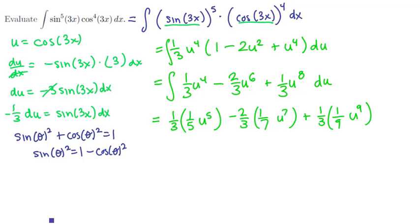At this point, we can clean up and back substitute. So we're going to get a grand total of 1 fifteenth u, which is cosine of 3x, quantity to the fifth, minus 2 over 21 times cosine of 3x, quantity to the seventh, plus 1 over 27 cosine of 3x to the ninth power.